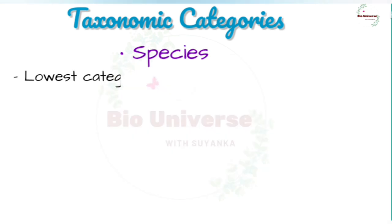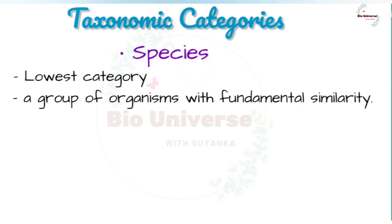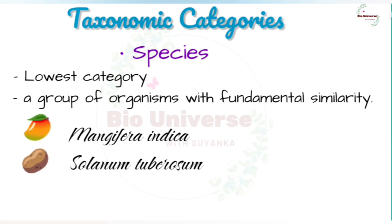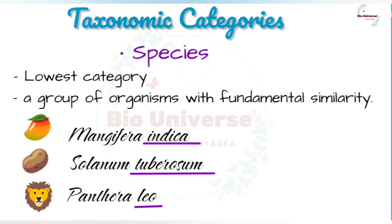Species is the lowest or basic taxonomic category, which consists of one or more natural populations of individuals that resemble one another more closely than individuals of other species, interbreed freely, have a distinct genetic setup, and are reproductively isolated from others. For example, in Mangifera indica, Solanum tuberosum, and Panthera leo, the specific epithets indica, tuberosum, and leo represent the species, while Mangifera, Solanum, and Panthera are the genera, representing a higher level of taxon.